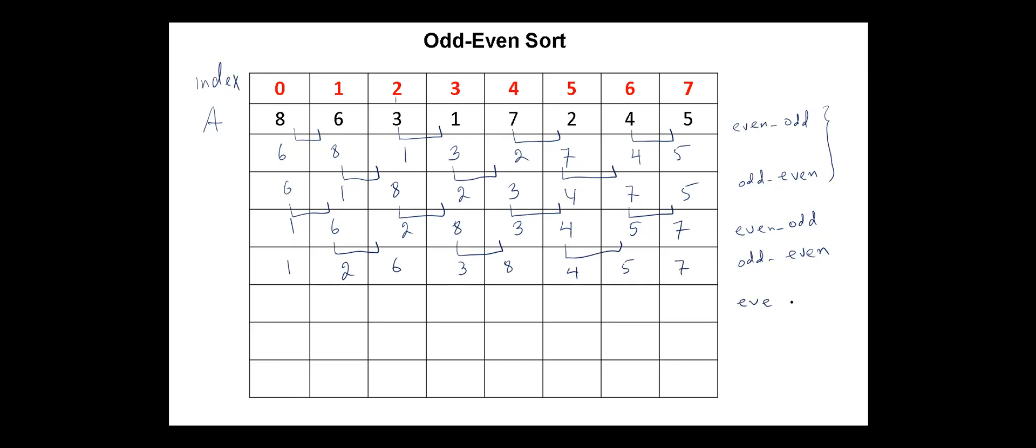Again we start with even-odd pairs. These two elements are in their places. These two elements should be swapped. And this as well. And these two elements are in their correct positions.